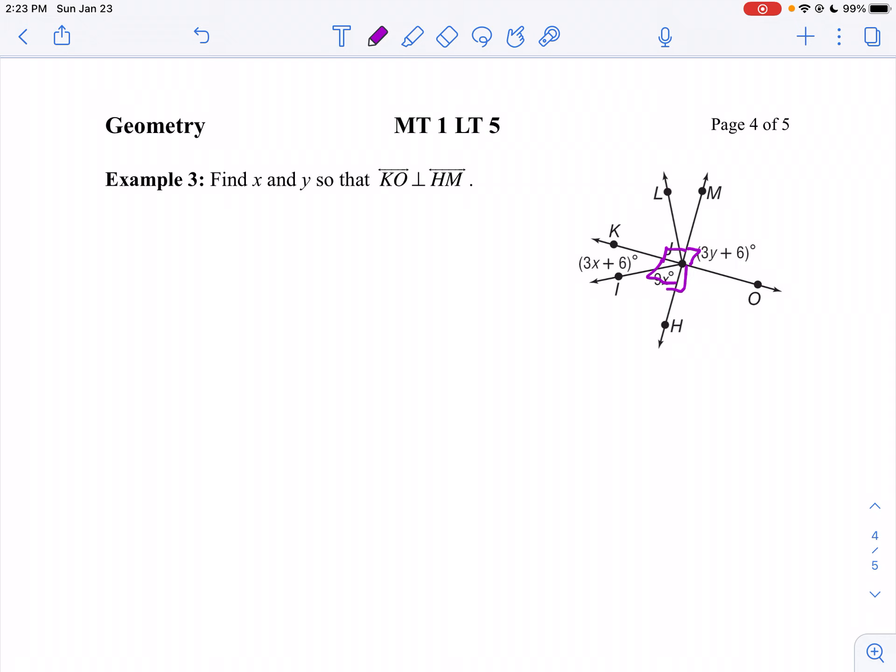The important thing is this first angle where I have Y. So 3Y plus 6 is my 90 degree angle. I'm going to solve for Y right away. 3Y plus 6 equals 90. Subtract 6 from both sides.